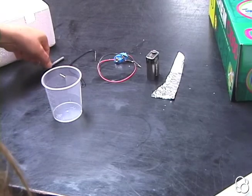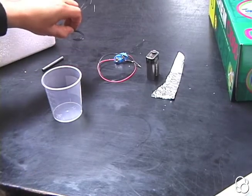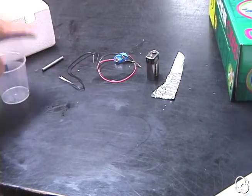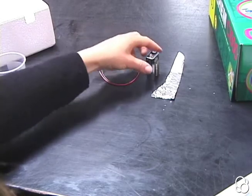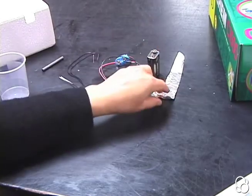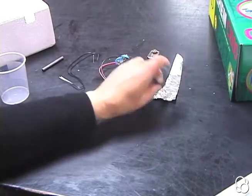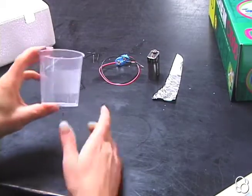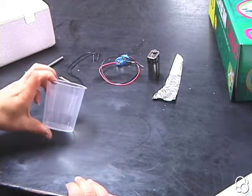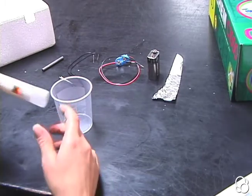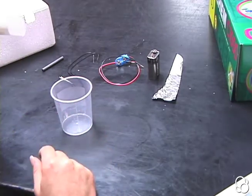You're going to need your carbon rod, these two wires, your battery clip, a battery, a piece of aluminum foil, one of these cups with some water, and some sodium carbonate to make a salt solution.